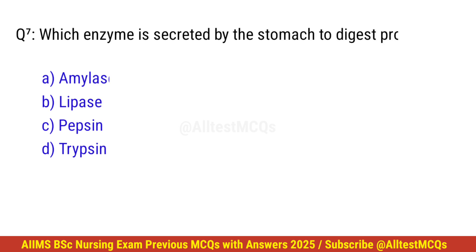Question number 7. Which enzyme is secreted by the stomach to digest proteins? Correct option is C. Pepsin.